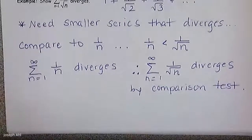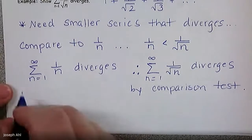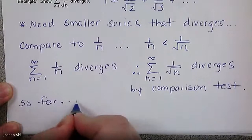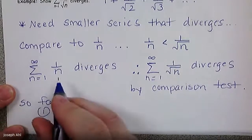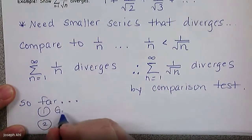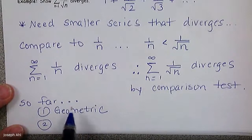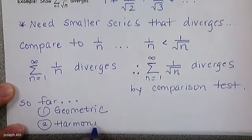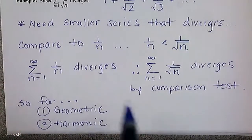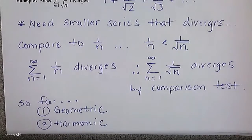For comparison purposes, the two major series we'll compare to are: geometric series, which we know converge when |r| < 1, and the harmonic series, which we can use when trying to prove divergence. If there's a good connection to either of these, we'll choose one as our comparison series.